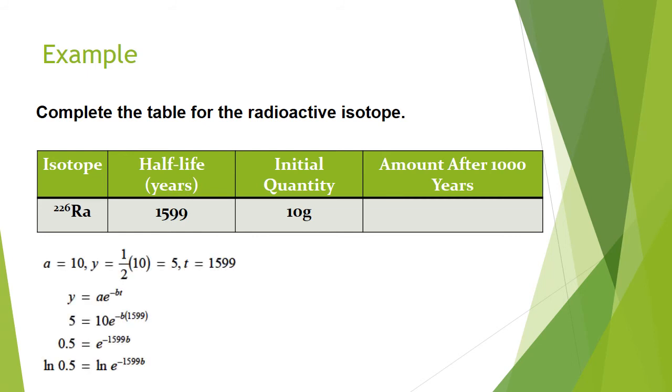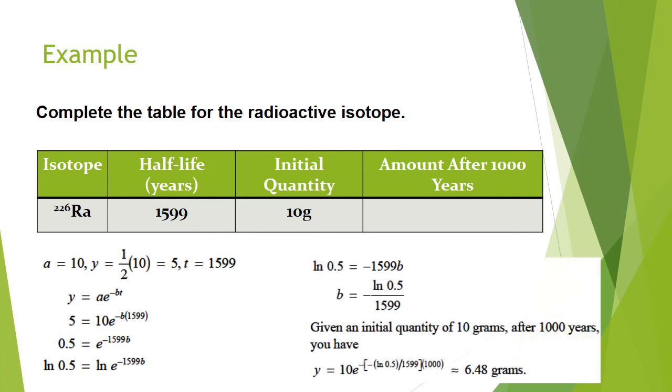So we're going to set it up where we have 5 grams left after 1,599 years. We use that to find B, and we get that B is negative natural log of 0.5 over 1599. Now, you may wonder why didn't we just put that in our calculator and round it. Well, if we can wait until we get our final answer, it's going to give us a far more accurate answer. So we're just going to put that whole mess in for B. So Y equals 10 times E, you see the power there, and we get 6.48 grams.